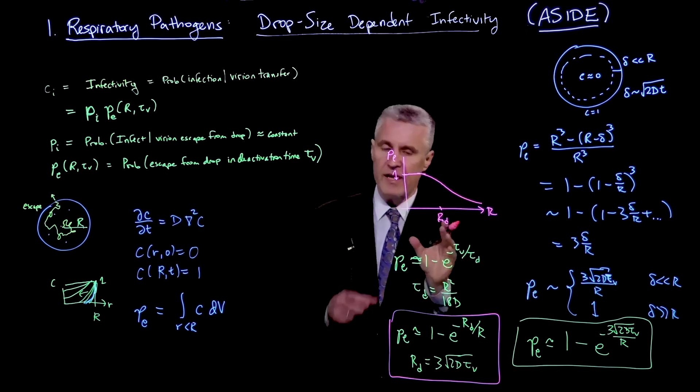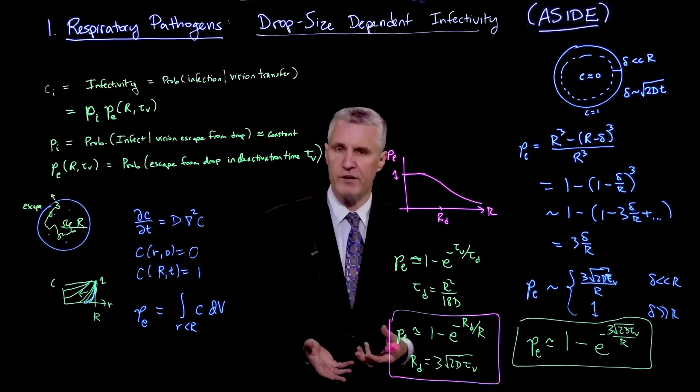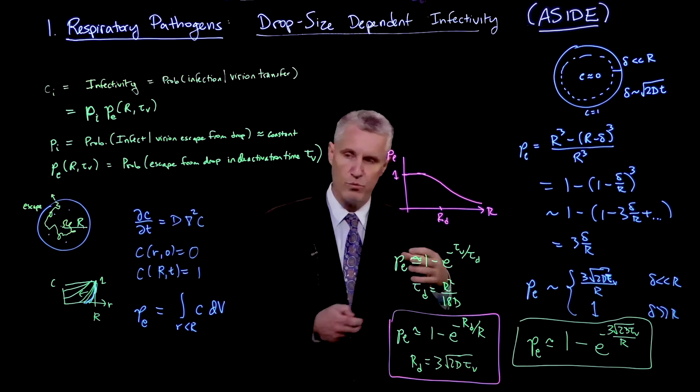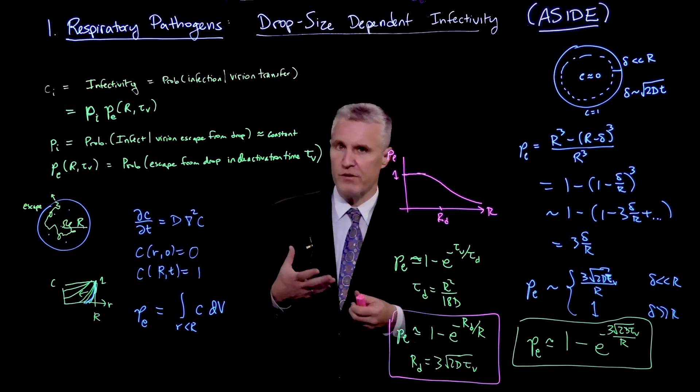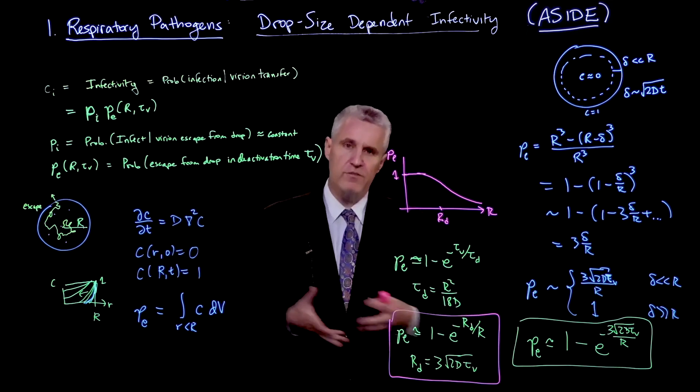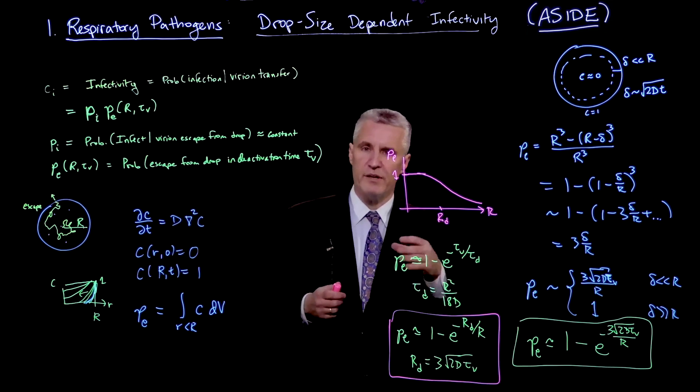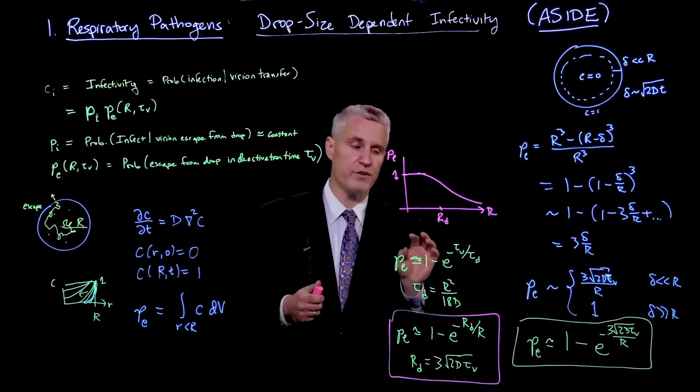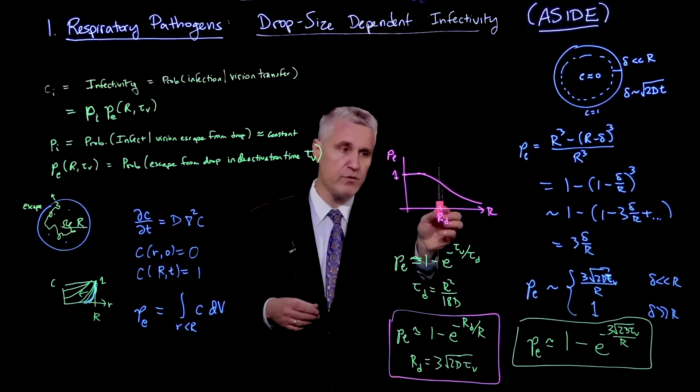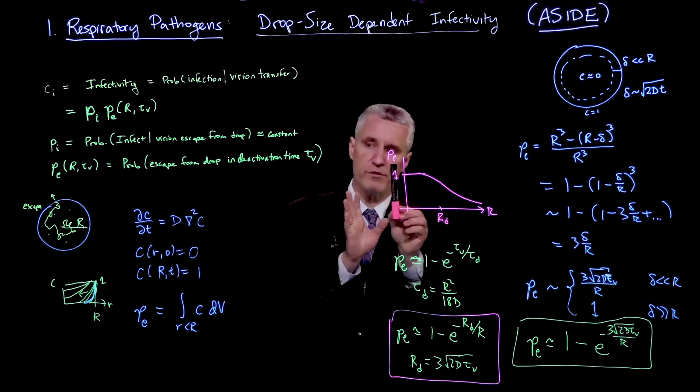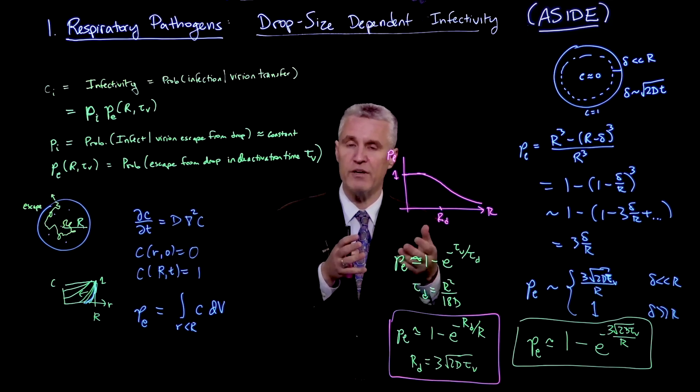I just wanted to get to this picture to point out that even though there are physiological characteristics having to do with the way that a virion would get into a host cell and whether they would get infected, those properties should be independent of the delivery of the virion in a droplet. But what this calculation shows is that we would expect a fairly strong dependence of the infectivity on the size of the droplet. Droplets smaller than Rd are highly infectious because every virion can get out and infect the host cell.